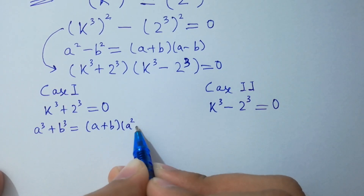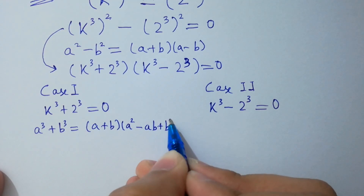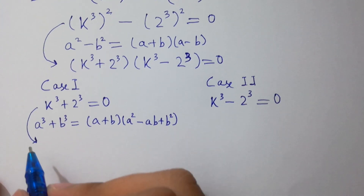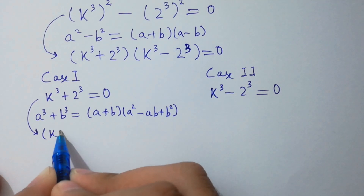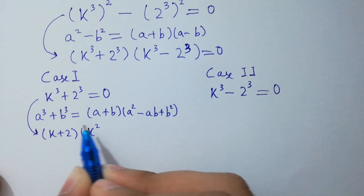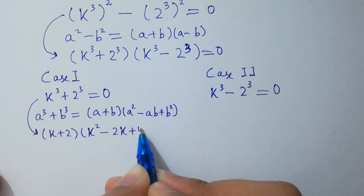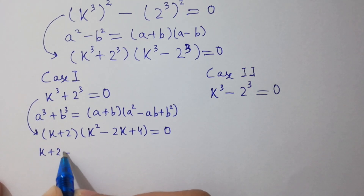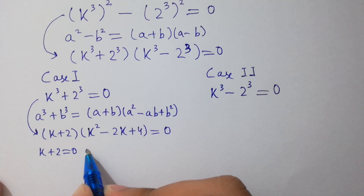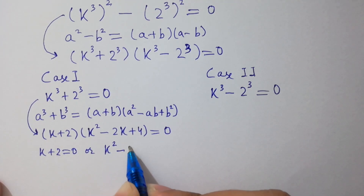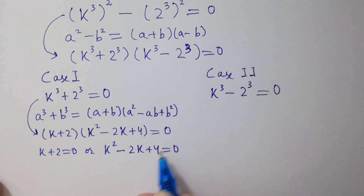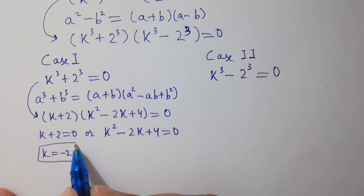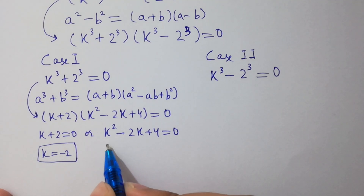Since a cubed plus b cubed equals (a + b)(a squared minus ab plus b squared), k cubed plus 2 cubed factors into (k + 2)(k squared minus 2k + 4) equals 0. Either k plus 2 equals 0, giving k equals minus 2, which is our first real solution, or k squared minus 2k plus 4 equals 0.